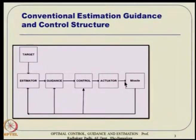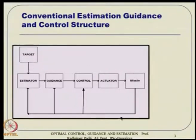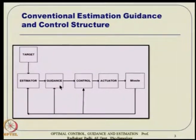Guidance gives some lateral command, which eventually goes to the control. Control can have its own inner loops — two or three loops by itself — then it goes to the actuator, which gives a fin deflection command. Fin deflection couples with the missile aerodynamics, its orientation changes, forces and moments change, and then it corrects its path.